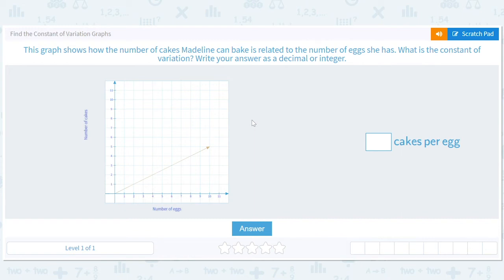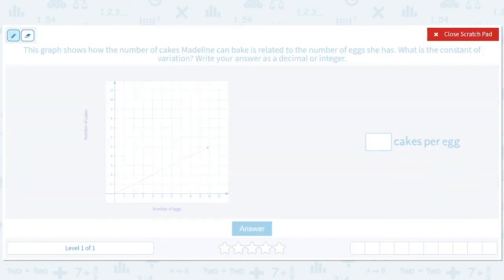Find the constant of variation in graphs. So we have, with constant of variation, that means we have one thing and we have another thing. Number of eggs, number of cakes in this example.